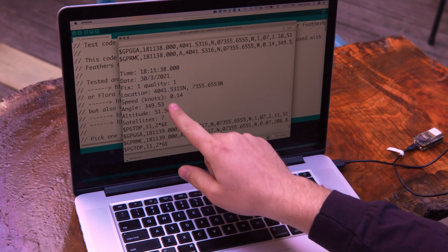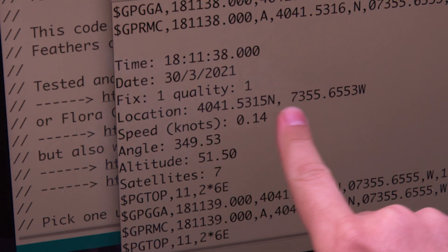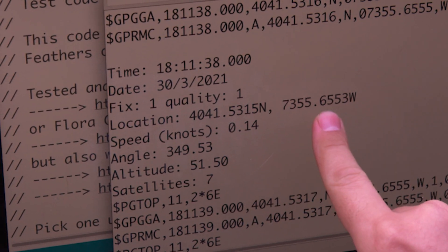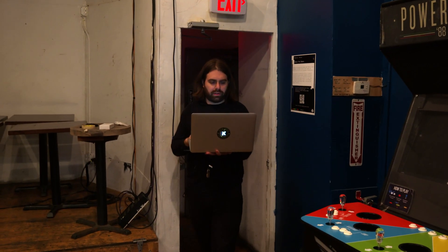So the next step is to go outside and see if it works outdoors. All right, I've got a fix. 40.41 north, 73.55 west. We're locked on. We'll see if this works when I bring it inside. Still got a fix, and it's gone.